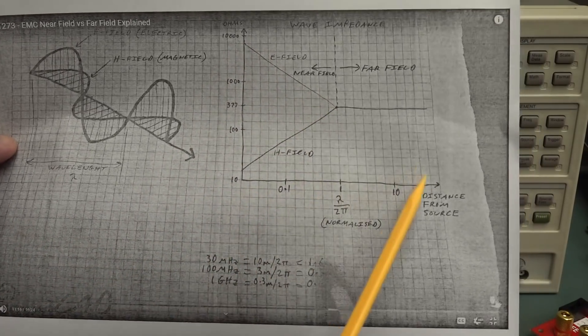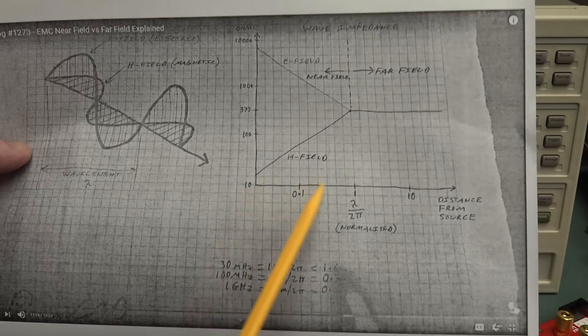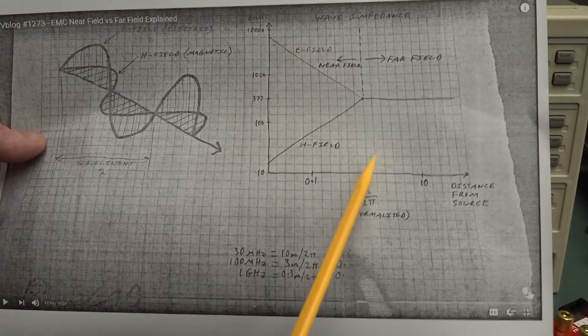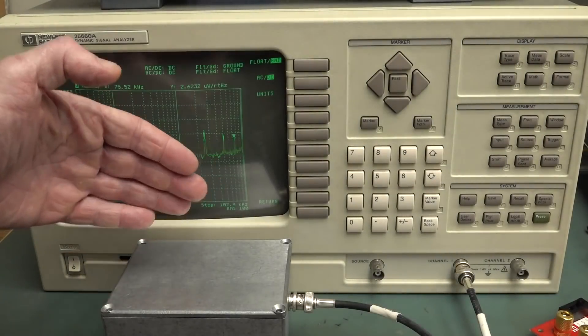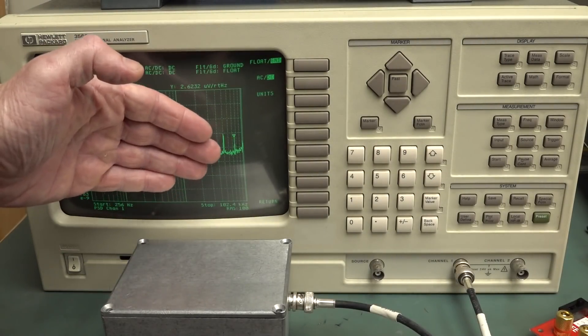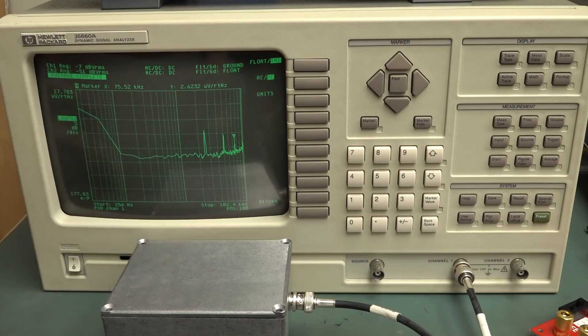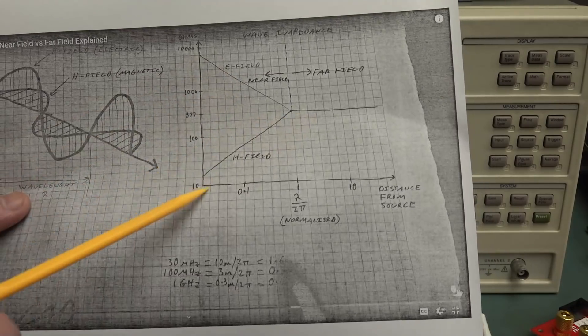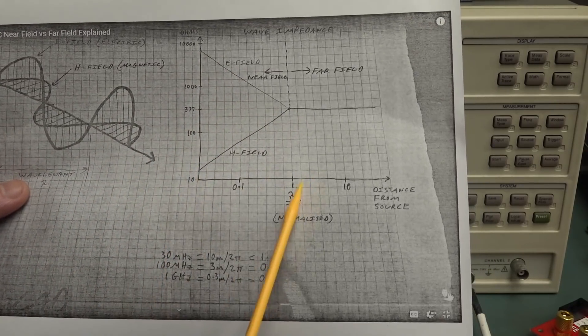And this is distance from the source in terms of wavelength of the frequency. And when you're what's called near field, when your device is physically near to your source like this, the electric fields and the magnetic fields actually differ. They actually separate like this.